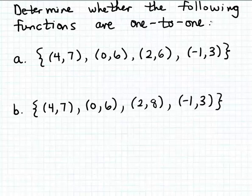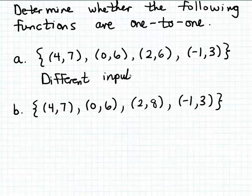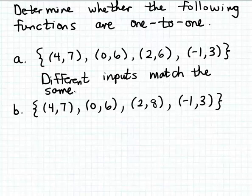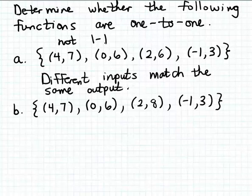The reason part A is not one-to-one is that different inputs match the same output. These two different inputs, 0 and 2, match the same output 6 — so A is not a one-to-one function. On the other hand, if you look at the function expressed in part B as a set of ordered pairs, notice that it cannot be the case that different inputs match the same output.